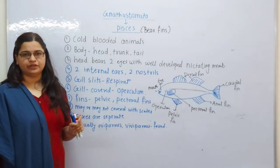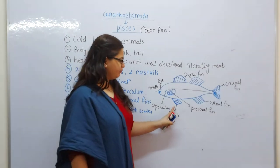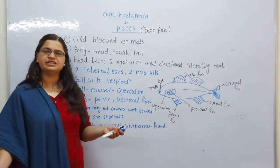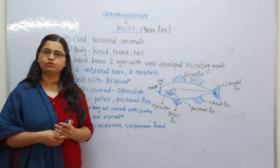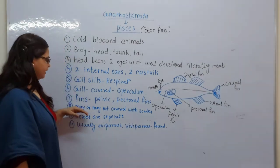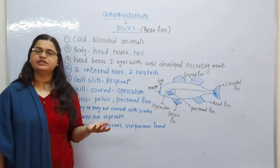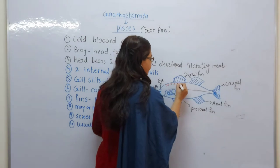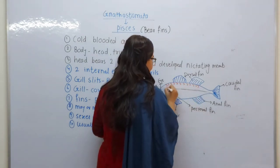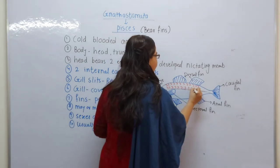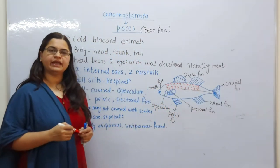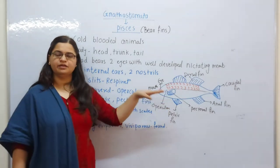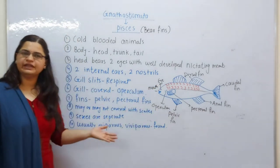There are two types of fins: pelvic and pectoral. You can see the diagram here — pelvic fins are here and pectoral fins are here. Fins help with locomotion and swimming. Generally, fish also have scales on their body, though many fish do not have scales and are smooth. Most of them, however, do have scales.